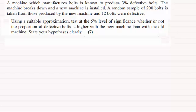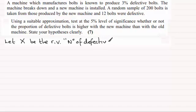Welcome back. If you had a go, the first thing I'd want to do is to define a random variable. So I'm going to say, let X be the random variable, RV for short, and it's going to be the number of defective bolts.